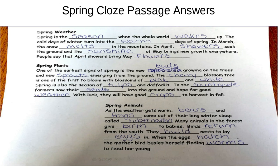Spring is the season when the whole world wakes up. The cold days of winter turn into the warm days of spring. In March, the snow melts in the mountains. In April, showers soak the ground, and the sunshine of May brings new growth everywhere. People say that April showers bring May flowers.